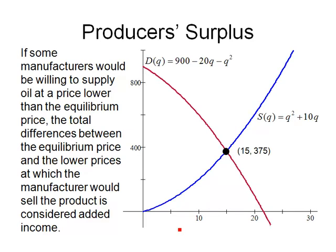Now let's look at it from a slightly different perspective. We talked about earlier that some consumers would be willing to pay more than $375, while some suppliers would be willing to supply oil at a price lower than the equilibrium price. The differences between the equilibrium price and the lower prices at which the manufacturer would sell the product is considered added income for the manufacturers.